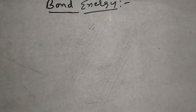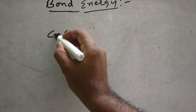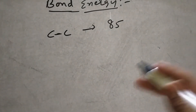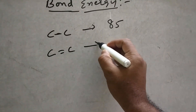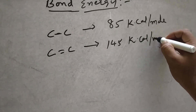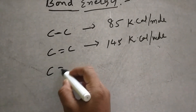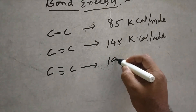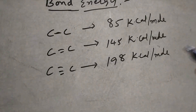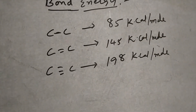Bond energy. Suppose a carbon-carbon double bond is formed — 145 kilocalories per mole of energy is released or liberated. For a carbon-carbon triple bond, when a new bond is formed, 198 kilocalories per mole of energy is released. The energy released when a covalent bond is formed between two atoms is known as bond energy.